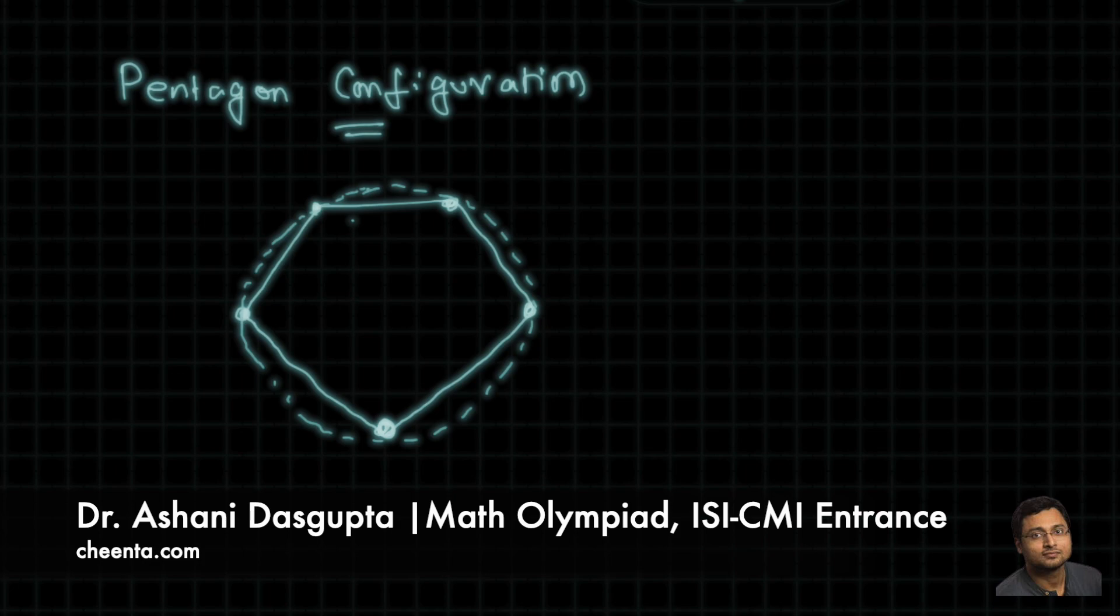How do we actually prove that there is a cyclic pentagon? Well actually we don't do that directly. We first work with a cyclic quadrilateral.